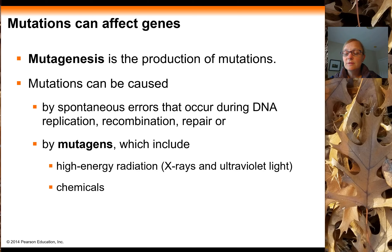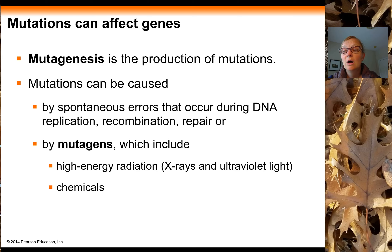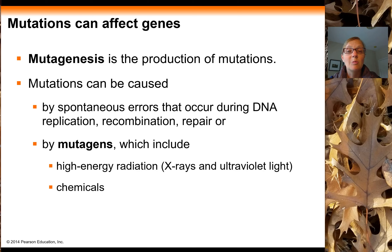The process of producing mutations is called mutagenesis, which can happen in a number of ways. They can be spontaneous errors during DNA replication, crossing over, or repair, or they can be directly caused by external factors called mutagens — things like high-energy radiation, X-rays, ultraviolet light, or chemicals like carcinogens in cigarette smoke. These mutagens can potentially mutate your DNA.